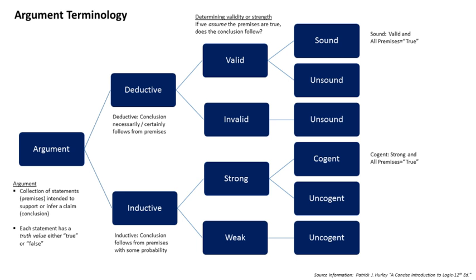A deductive argument asserts that the truth of the conclusion is a logical consequence of the premises. Based on the premises, the conclusion follows necessarily, with certainty. For example, given premises that A equals B and B equals C, then the conclusion follows necessarily that A equals C. A deductive argument is said to be valid or invalid. If one assumes the premises to be true, would the conclusion follow with certainty? If yes, the argument is valid; otherwise, it is invalid.